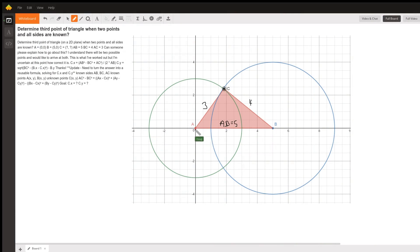We're given the points A and B, 0, 0, and 5, 0, and obviously then the length of AB has to be 5, and we're told that we want to find the third point of a triangle so that AC is 3 and BC is 4.